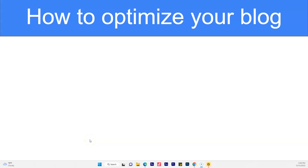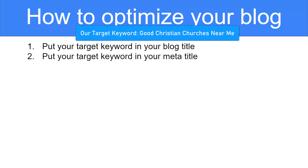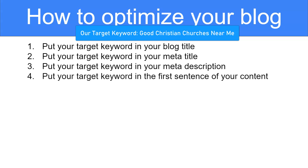Here are the 12 steps you want to take in optimizing your blog for the search engines. Number one, put your keyword in your blog title — so our targeted keyword is 'good Christian churches near me,' and we want that in the blog title. Number two, put your target keyword in your meta title. I'll show you how to do all this step by step in the coming videos. Step number three, put your target keyword in your meta description. Step number four, put your target keyword in the first sentence of your content.